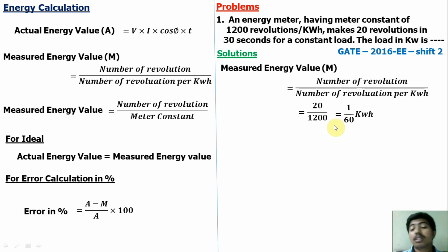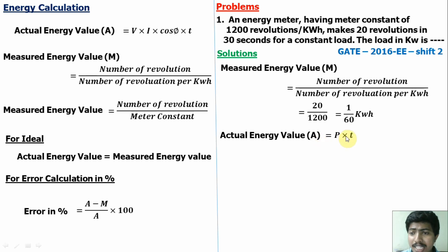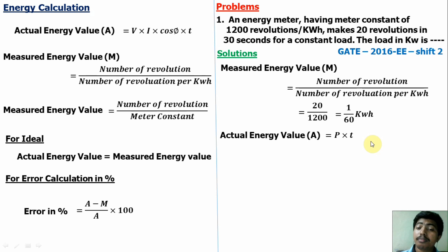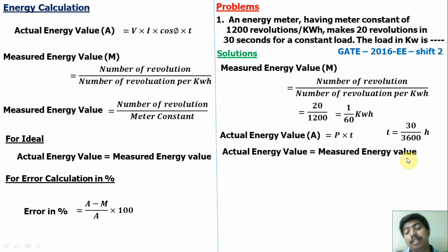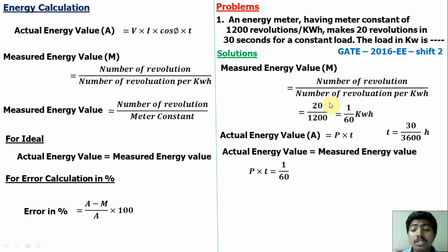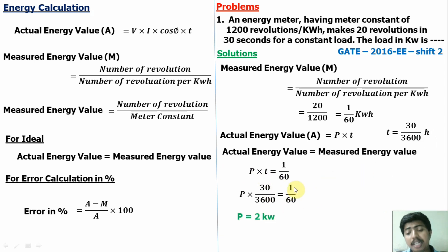We have to find power. The actual energy value equals power into time. Time is given as 30 seconds, which we convert to hours: 30 divided by 3600 hours. Assuming the meter is ideal — actual value equals measured value — we substitute: power into (30/3600) equals 1/60. Solving this equation, we get power equal to 2 kilowatt.